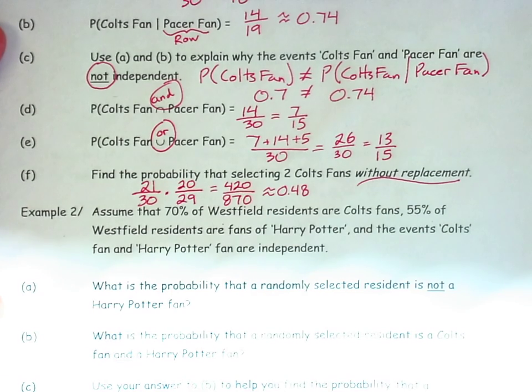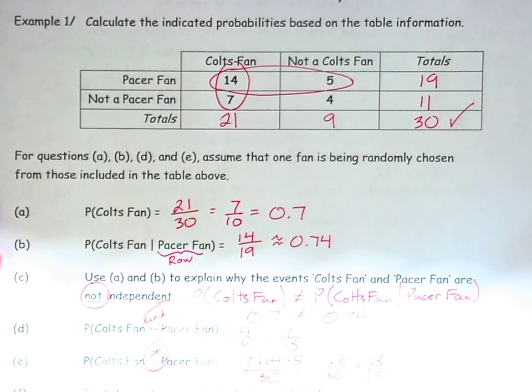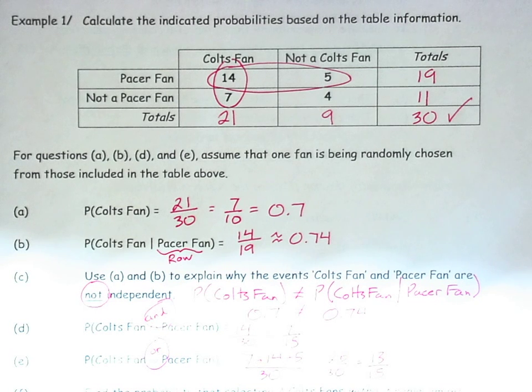So there we go. The basics about probabilities that you can calculate just by reading numbers out of a table. That's a skill we've seen previously on the AP exam. Hope this is helpful.